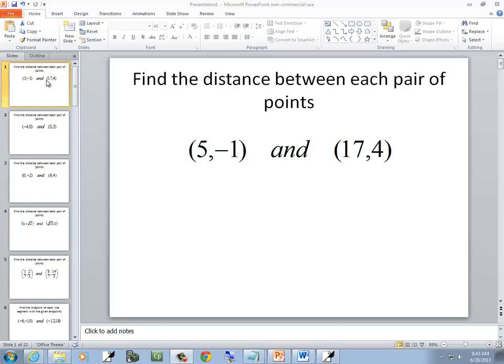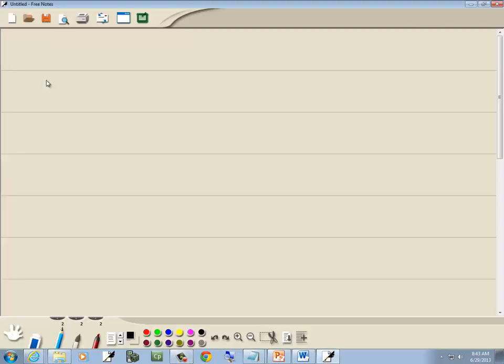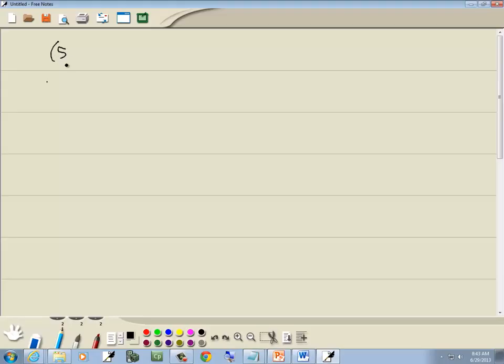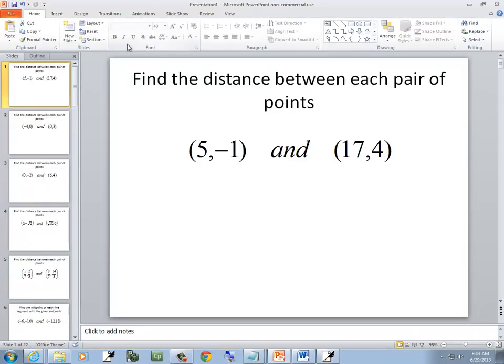In this problem, we're going to find the distance between each pair of points. So we've got 5, negative 1, and 17, 4.